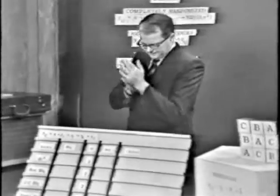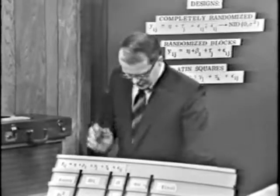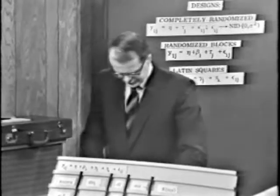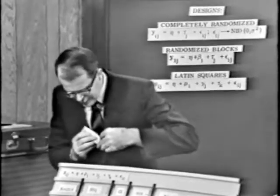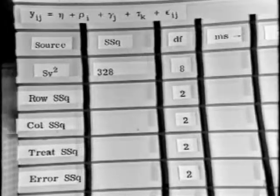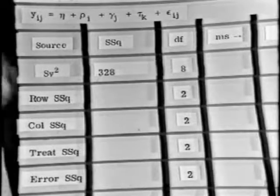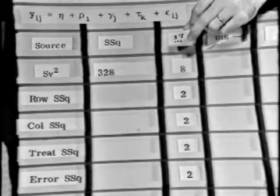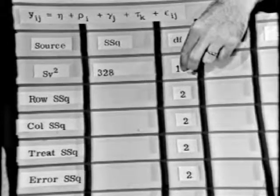Well now, the corrected sum of squares in this case came out to be 328. But pray, how many degrees of freedom does this corrected sum of squares now have? That corrected sum of squares are 18 observations, so the corrected sum of squares is now going to have 17 degrees of freedom.